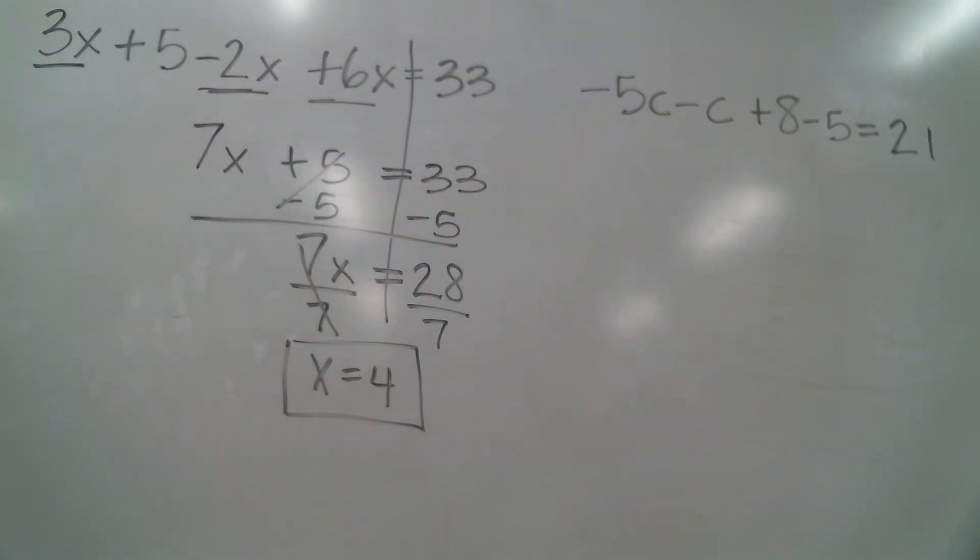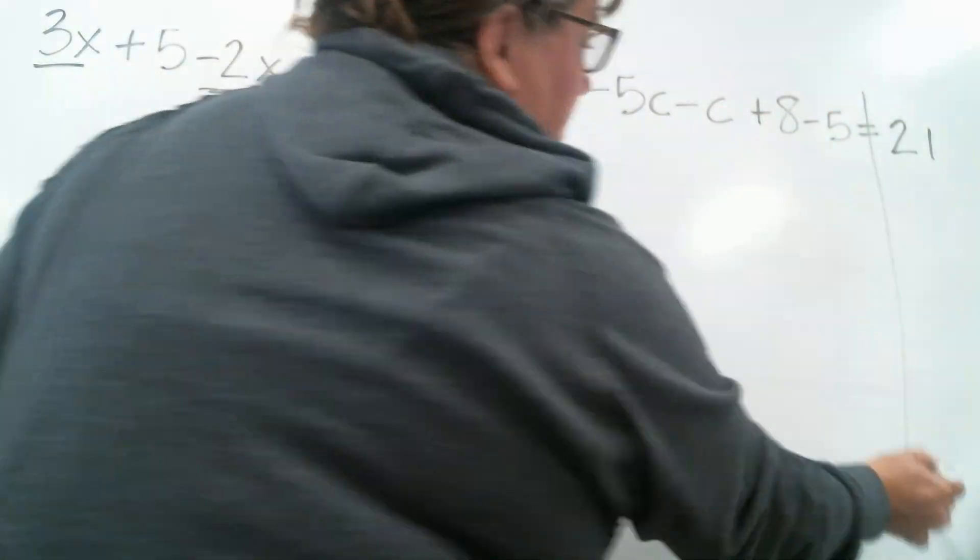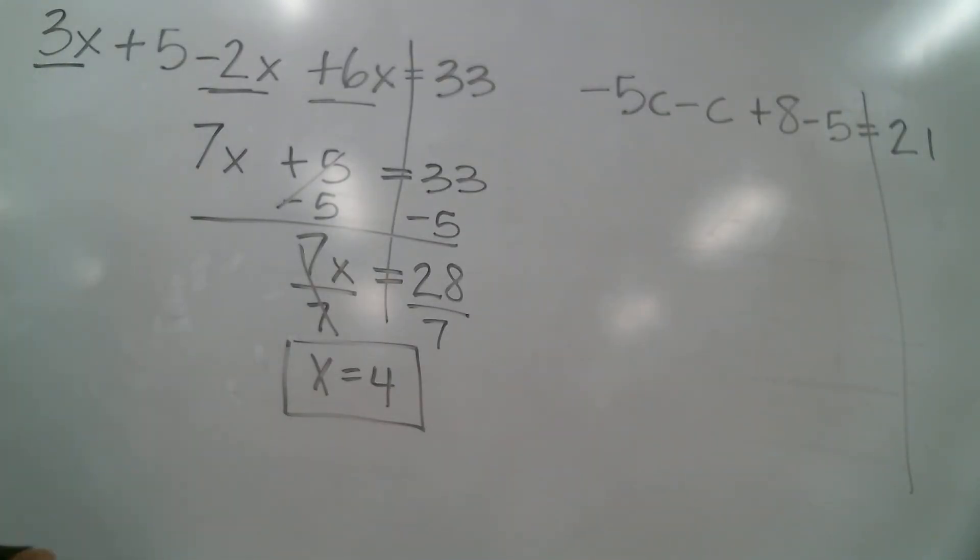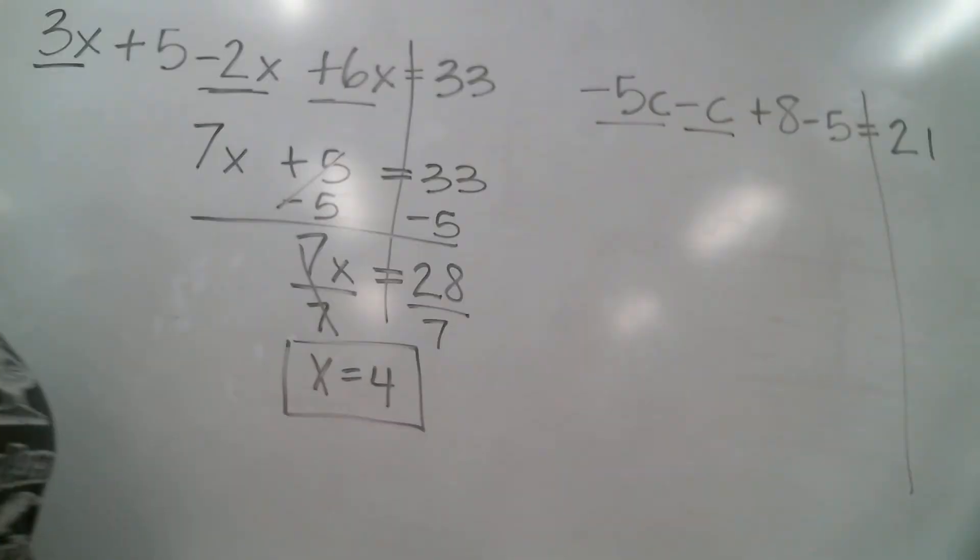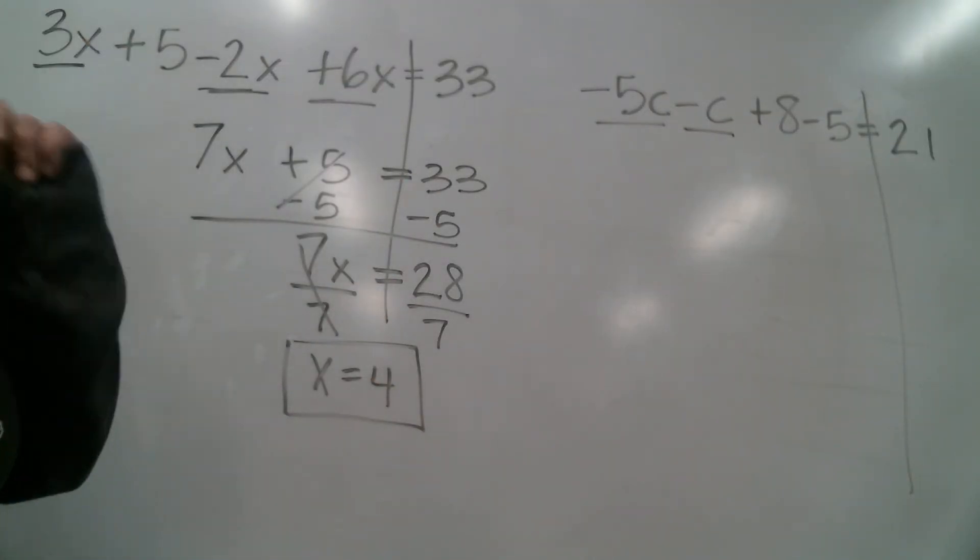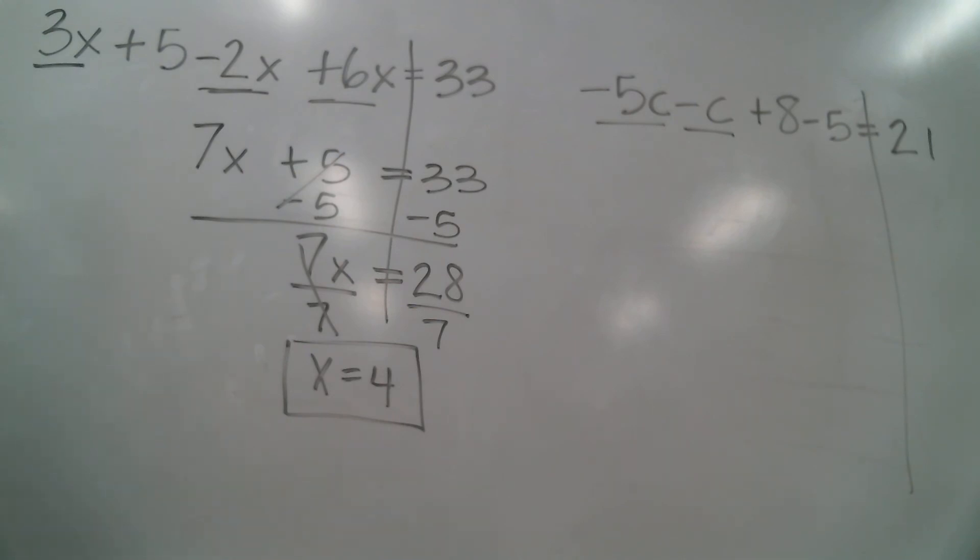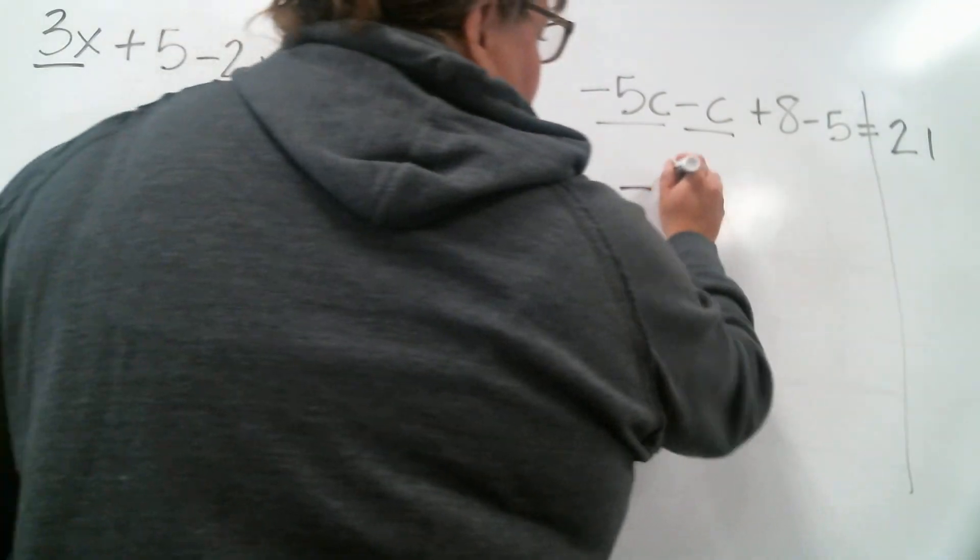Now on this last one, I'm gonna go ahead and draw a line. I've got negative 5c minus c plus 8 minus 5. And they're all on the same side together so I'm gonna have to combine up the like terms. I'm gonna start with the c's. And I see I've got a negative 5c and a negative c. Okay, and when there's no number there that's just 1c. We don't have to have a 1. So I've got negative 5c minus another c. So all together I have negative 6c's. So negative 6c.